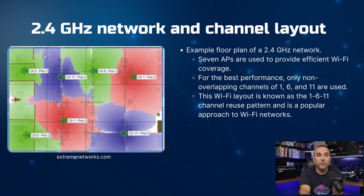An example floor plan of a 2.4 gigahertz network includes the use of seven access points, or APs, to ensure effective Wi-Fi coverage. To optimize performance, only non-overlapping channels such as 1, 6, and 11 are used. This configuration follows the 1-6-11 channel reuse pattern, which is a well-known strategy in designing Wi-Fi networks.